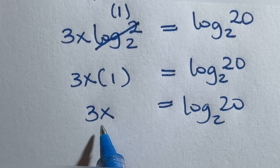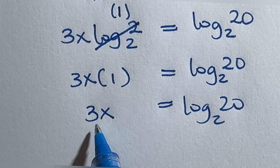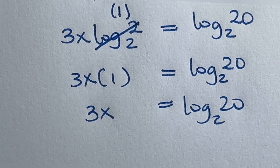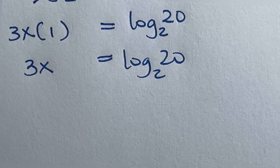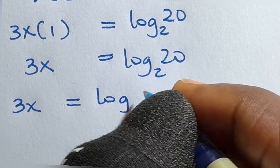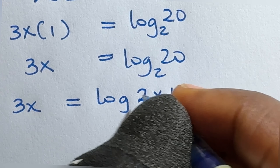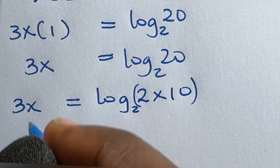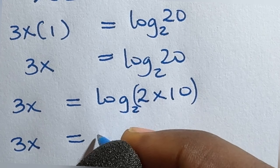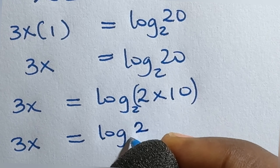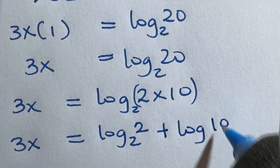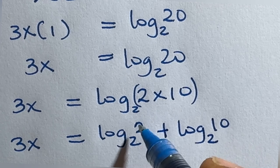To solve for x, I'm going to separate this 20 first using the basic laws of logarithm. Let us separate 20 into 2 times 10. So we have 3x equal to log base 2 of 2 times 10, which we can separate by application of the laws of logarithm. This becomes log₂2 plus log₂10.